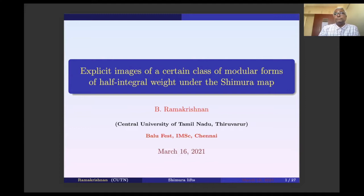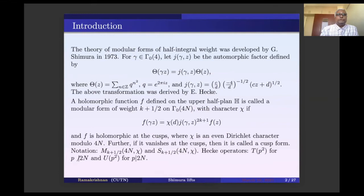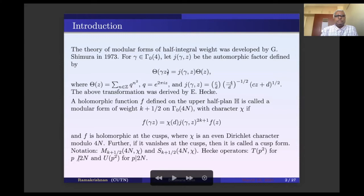Today's talk is about certain properties of the Shimura map on certain class of modular forms of half-integral weight. The whole thing started with an observation made by Selberg. Before we go to the problems, I give a brief introduction of what we are working on. The theory of modular forms of half-integral weight was developed by many people following the famous work of Shimura in 1973.